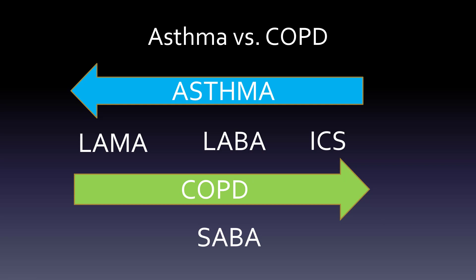When treating asthma, as it gets worse, we start with the inhaled corticosteroid, then move to a long-acting beta-2 agonist, and then maybe a long-acting muscarinic antagonist. For COPD, we go the other way — from the muscarinic to the beta-2 to the steroid. Keep those two opposite arrows in mind for asthma versus COPD. Both conditions also use a SABA.